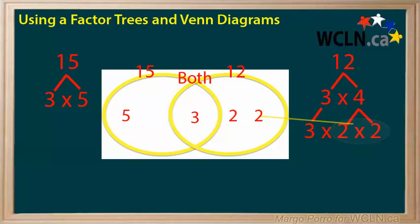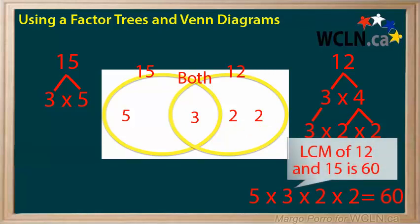Using a Venn diagram helps to make sure that the matching pairs are only used once and to make sure that the other prime factors are also included. To find the lowest common multiple, simply multiply the factors from the Venn diagram. 5 times 3 times 2 times 2. We say that 60 is the lowest common multiple of 12 and 15.